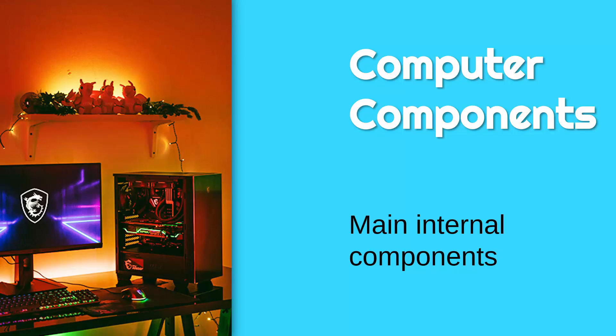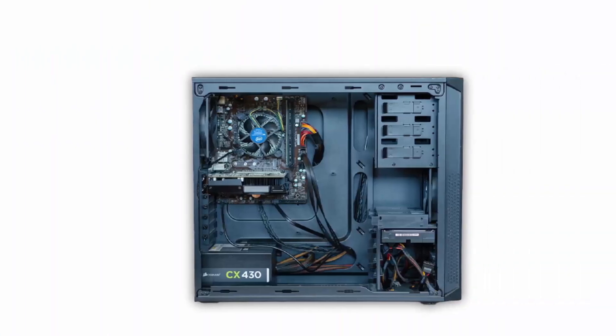I'm now going to go through some of the main components of a computer. There'll be other videos which go into some of these in more detail. I'm going to focus on the CPU and the motherboard in this video. But let's first of all have a look at a typical desktop computer and pick apart the main components inside it. You might have a look at this fairly empty case and spot the main components.